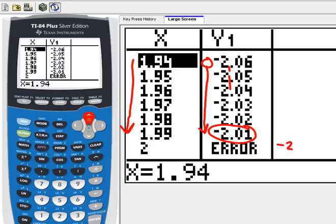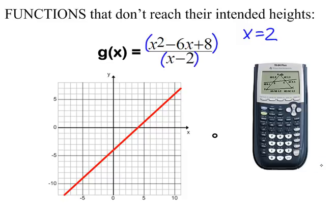So this limit, as x approaches 2, would equal negative 2. And again, graphically, that makes sense as well. So what we would say here, then, is the limit as x approaches 2 of the function g(x) is negative 2.